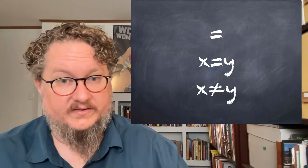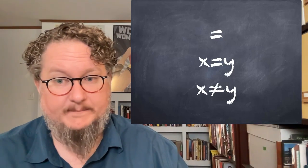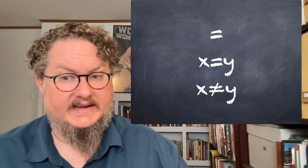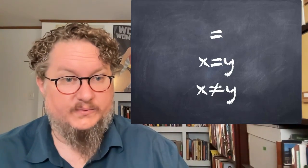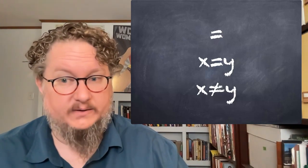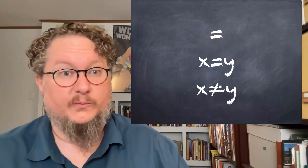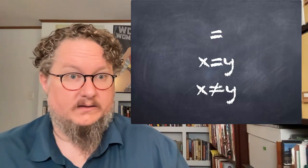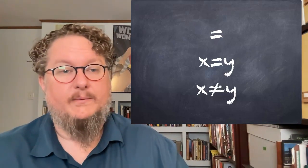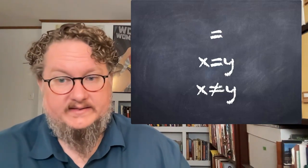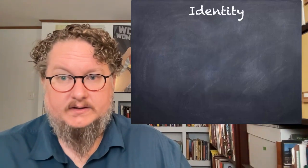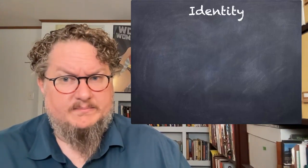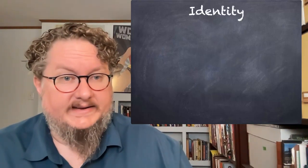We will also show the negation of this predicate with a slash over the equal sign. When we add identity to QL, we call our formal language QL with identity. So we have QL by itself, and we have QL with identity. Let's look at some examples of when we might use identity.